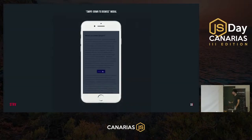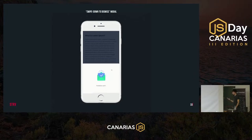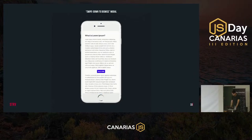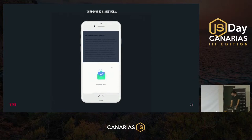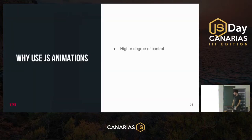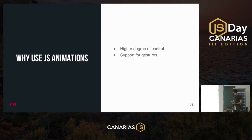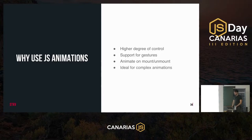With all this code we get our complete interaction — everything works. JavaScript animations really shine where we need a high degree of control. They're ideal when we need to work with gestures, which simply isn't possible with just CSS animations, and they allow us to animate things when they get mounted or removed from the DOM tree. Generally, for more complex animations, that's when we want to use JavaScript animations.